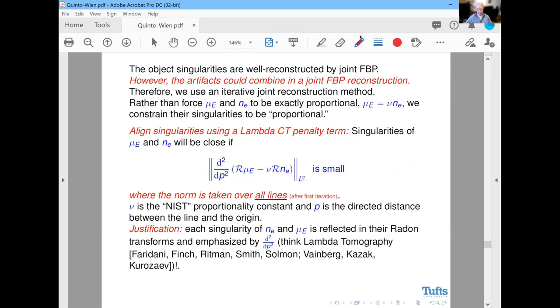The radon transforms encode all the singularities of the object. Taking the derivative emphasizes those. That was one of the key things about Lambda CT, that Lambda reconstruction amplified singularities by amplifying the singularities of the radon transform. Every singularity is reflected in the radon transforms and emphasized by the derivative. The X-ray and Compton artifacts will be suppressed because they're at different locations. So the common artifacts are well aligned, but the artifacts at different directions aren't, because they're in one of the reconstructions but not the other. Therefore they're at different places when you take the radon transform.